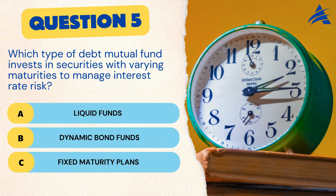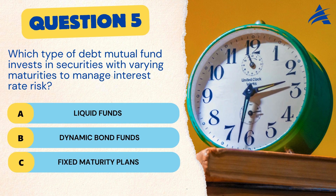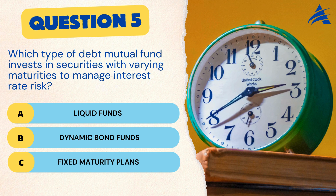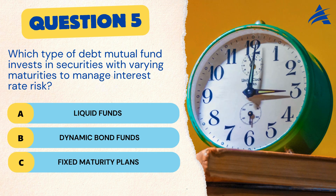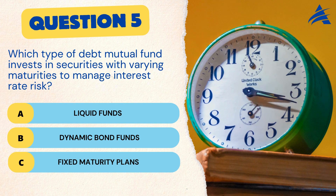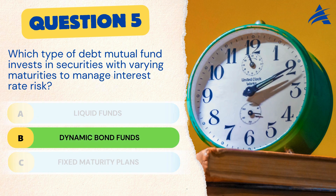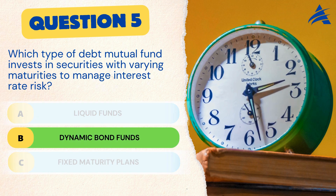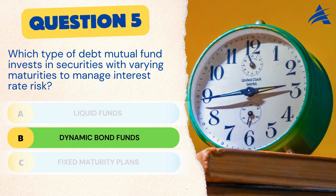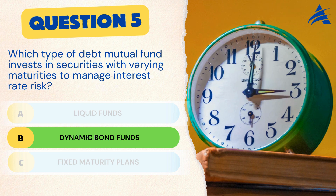Question 5. Which type of debt mutual fund invests in securities with varying maturities to manage interest rate risk? A. Liquid funds. B. Dynamic bond funds. C. Fixed maturity plans. The correct answer is B. Dynamic bond funds. Dynamic bond funds employ a flexible approach to managing interest rate risk by adjusting their portfolio's maturity profile according to prevailing market conditions.